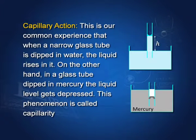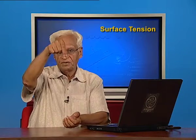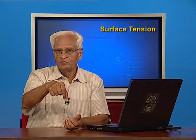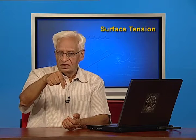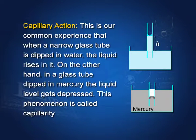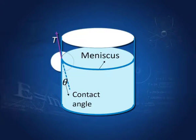When a narrow glass tube is dipped in water, the liquid rises in the tube. On the other hand, in a glass tube dipped in mercury, the liquid level gets depressed. This phenomenon is called capillarity. What causes it? Let us try to understand.